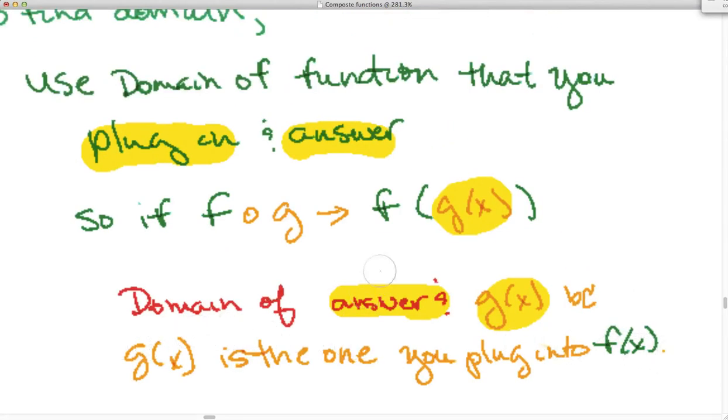So the reason why if we're doing fog is because we're using g of x to create the answer being plugged in by plugging it into f of x. So basically, know the domain. It's the final answer and what you plug in.